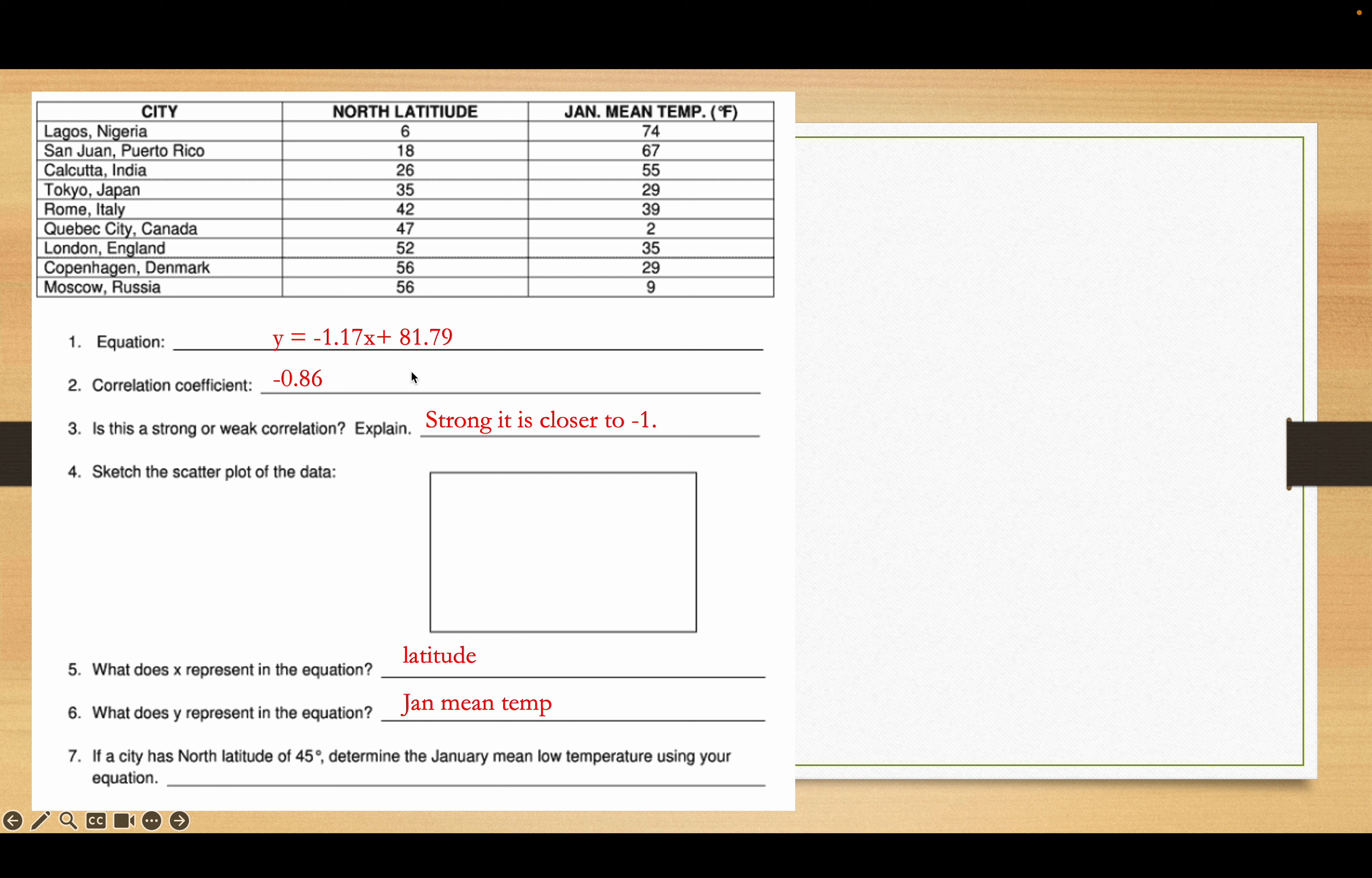If a city has a north latitude of 45, then what you're going to do is take your linear regression equation. The whole point behind it is that it predicts what the value should be. So you write it again but this time you plug in a 45 for x because it's at a latitude of 45. So I get negative 1.17 times 45 plus 81.79 and it comes out to 29.14.